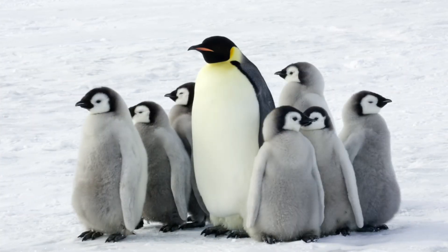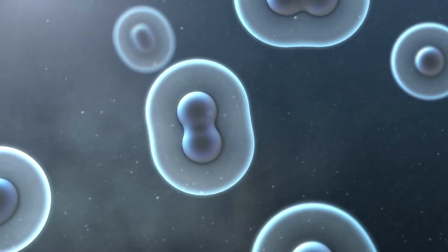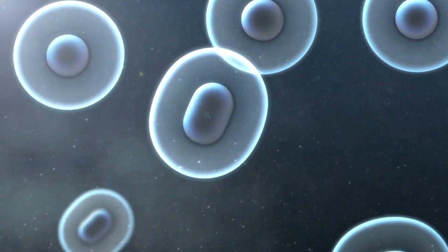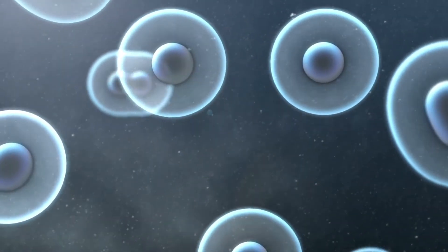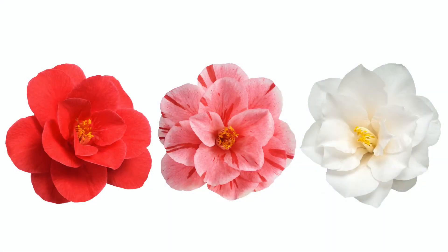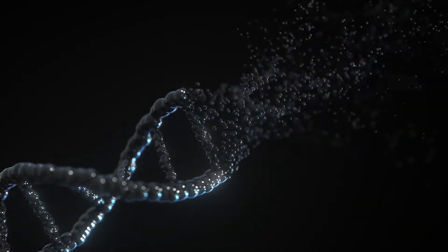Next up in our criteria for life, living things make more living things. The third characteristic of living things is reproduction. Single-celled organisms like bacteria tend to go through a process called asexual reproduction — making exact copies of themselves without the help of a second cell — whereas more complex multicellular organisms use sexual reproduction, mixing their traits and creating new combinations. In both cases, DNA, the instructions for life, must be copied and passed on.